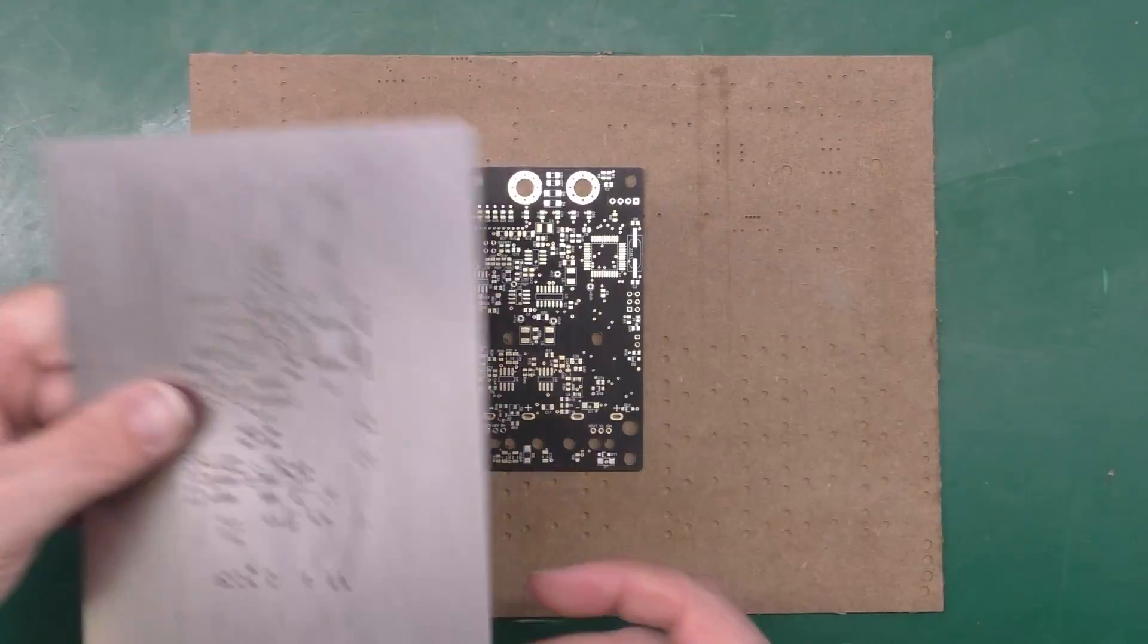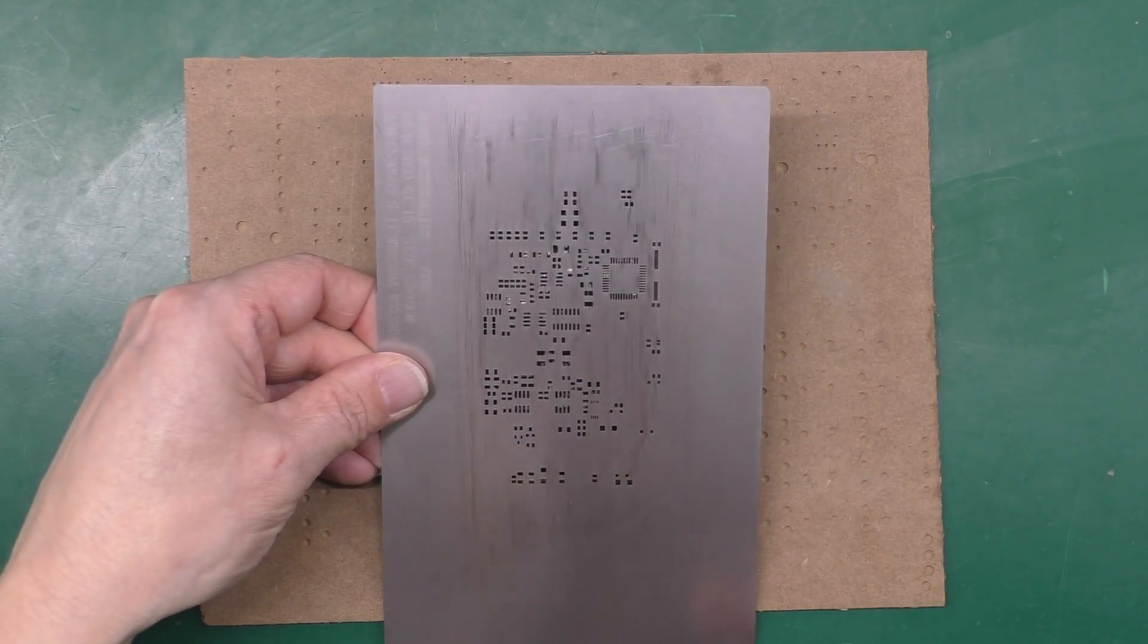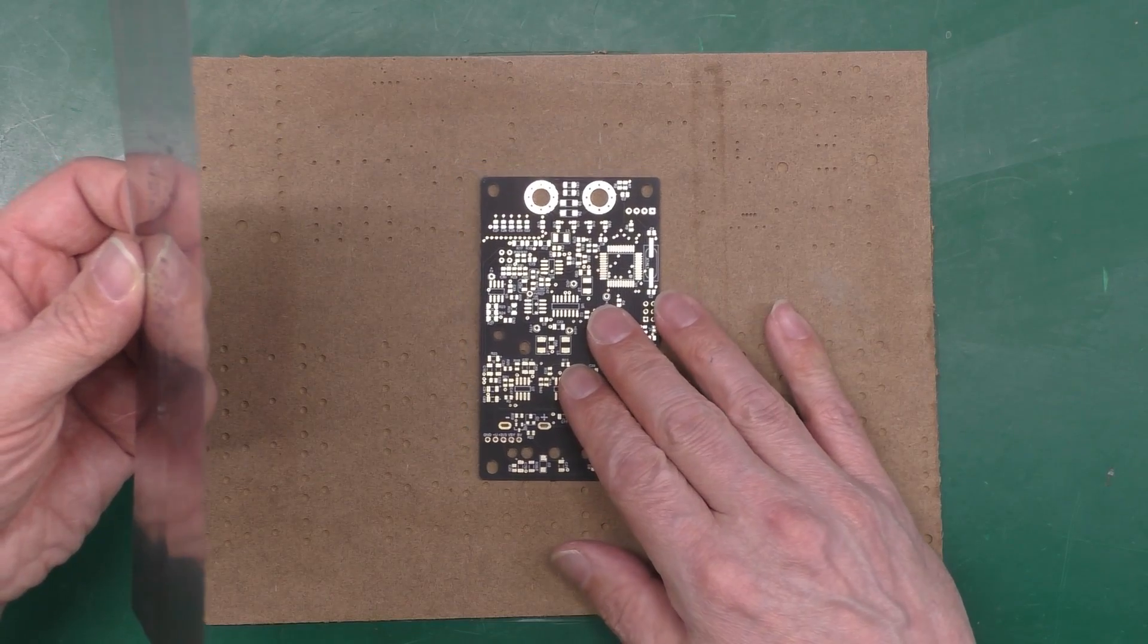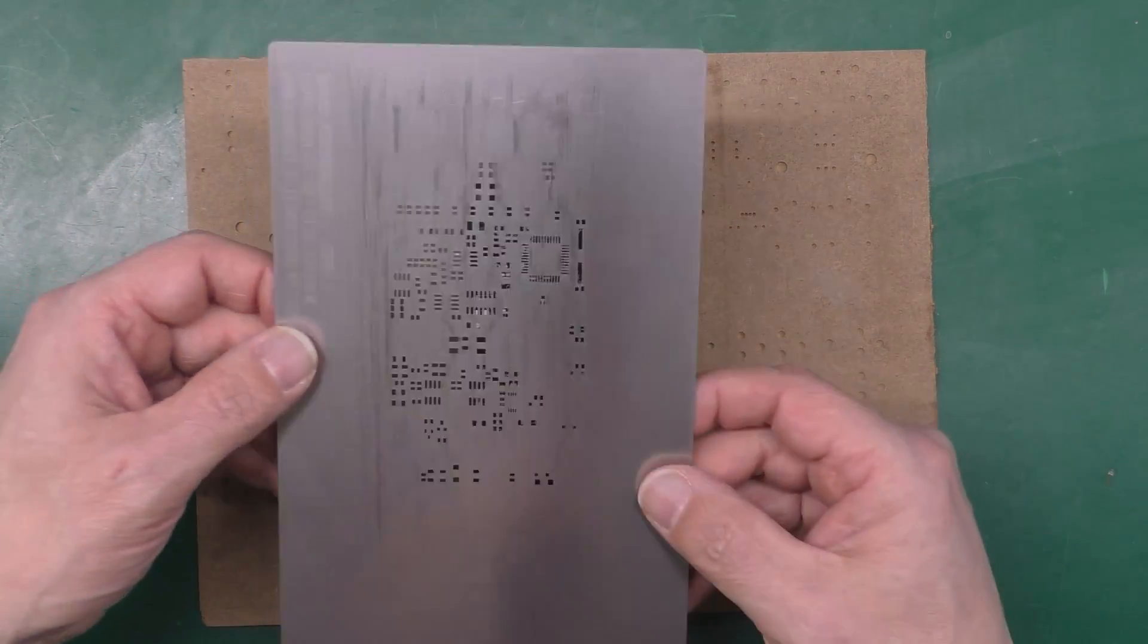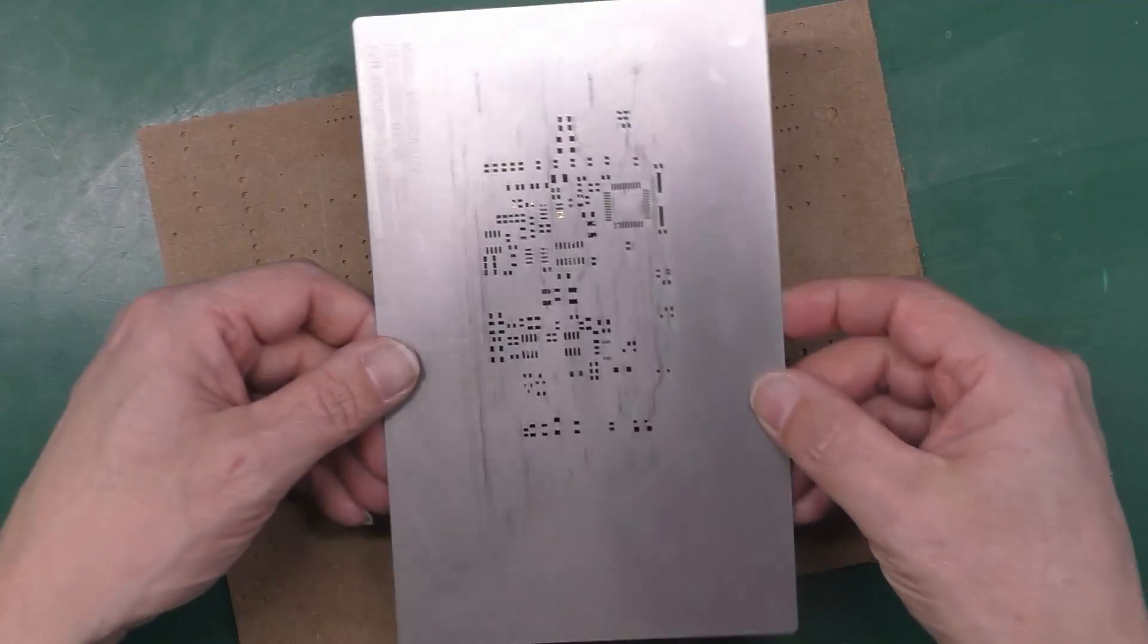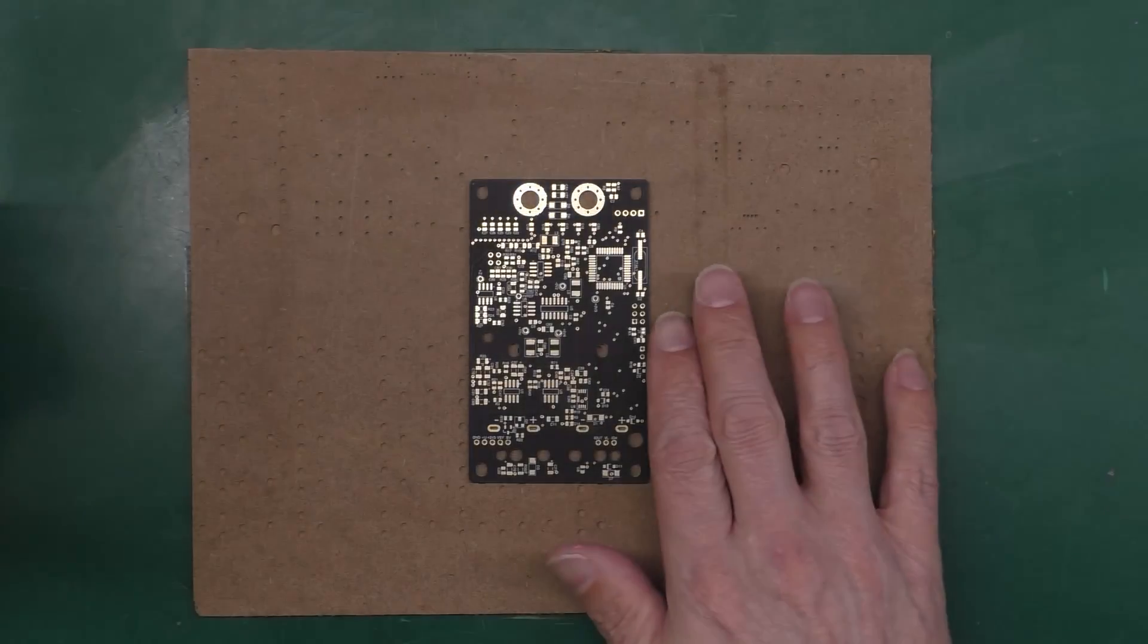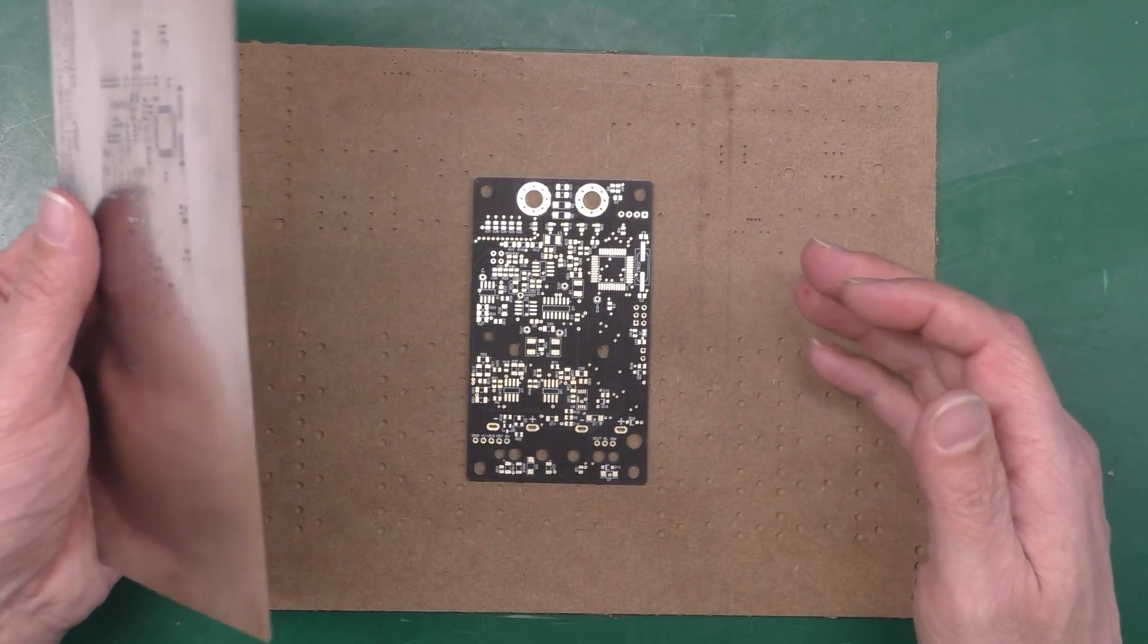You lay your stencil over the top of it and then you apply the paste through the holes onto the PCB, but the problem is you need to fix the PCB in place so that it doesn't move around and also extend out the height around the board so that the stencil sits absolutely flat and doesn't bend over the edges of the PCB. There's a couple of things you need to do there. You need to make up a jig.